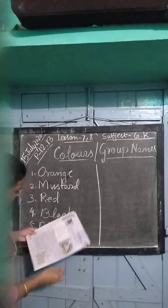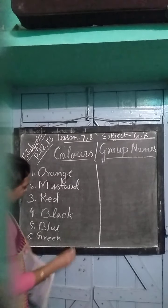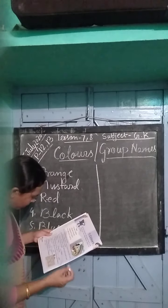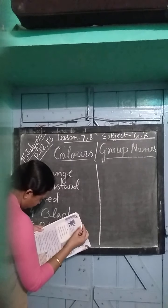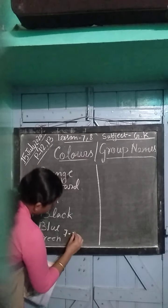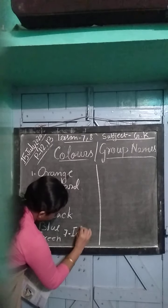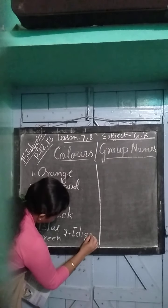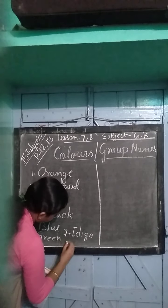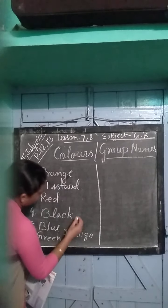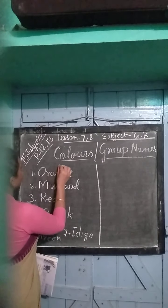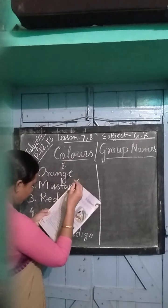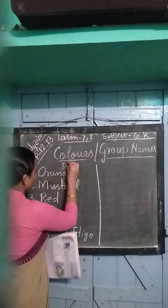Green. Then seventh number — indigo. Indigo. Eight number — blue.